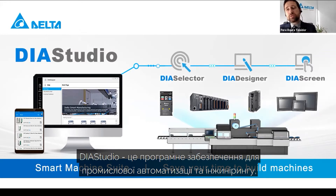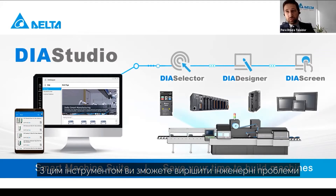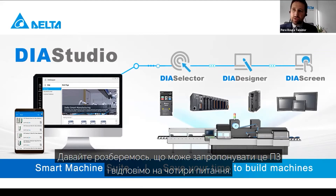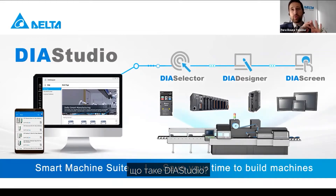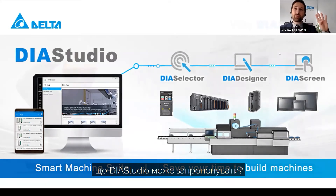DS Studio is the industrial automation engineering software that will level up the product portfolio, giving a sense of unity and flexibility. With this tool, you're able to solve engineering problems from the engineer's perspective. Let me give you a glimpse of what DS Studio can offer by responding to four questions: Why DS Studio? What is DS Studio? What does DS Studio do? How does DS Studio work? And what can DS Studio offer?